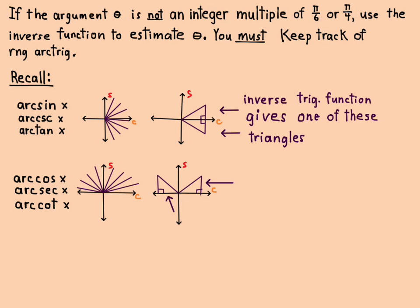And so their triangles are going to be in the upper half plane like that. That's the range of the arc cosine, the arc secant, and the arc cotangent are all up there.